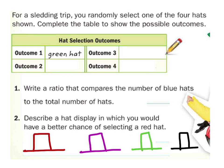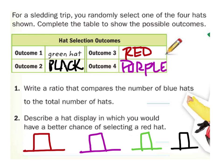Here are our hats, and we're going to pick these. The first one is a green hat — that's our first outcome. Let's randomly select one: the next one was the black hat, and then three and four as well. Now let's write a ratio that compares the number of blue hats to the total. We didn't choose any blue hats, but there are four hats, so it would be zero to four.